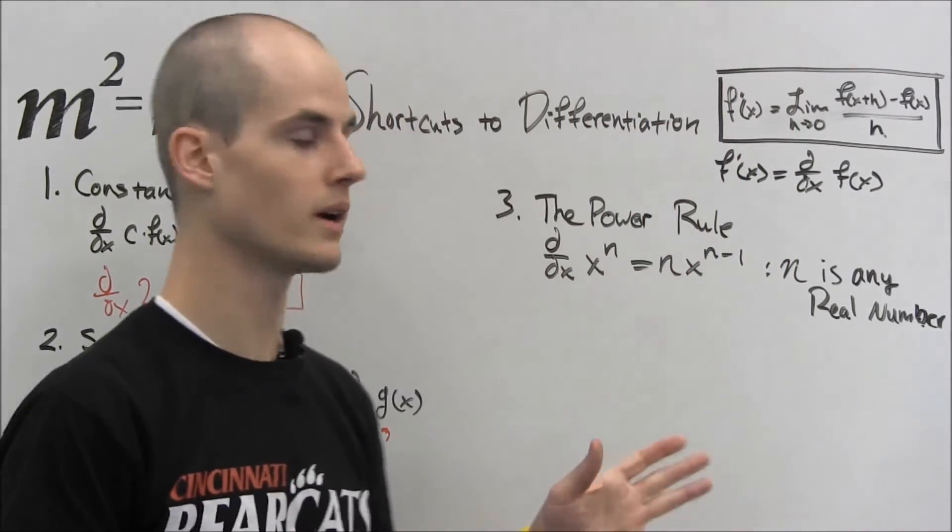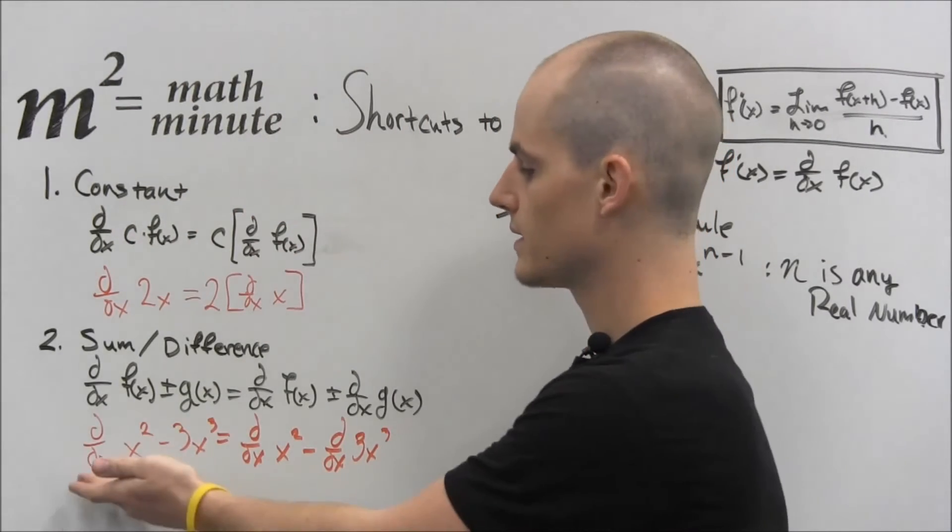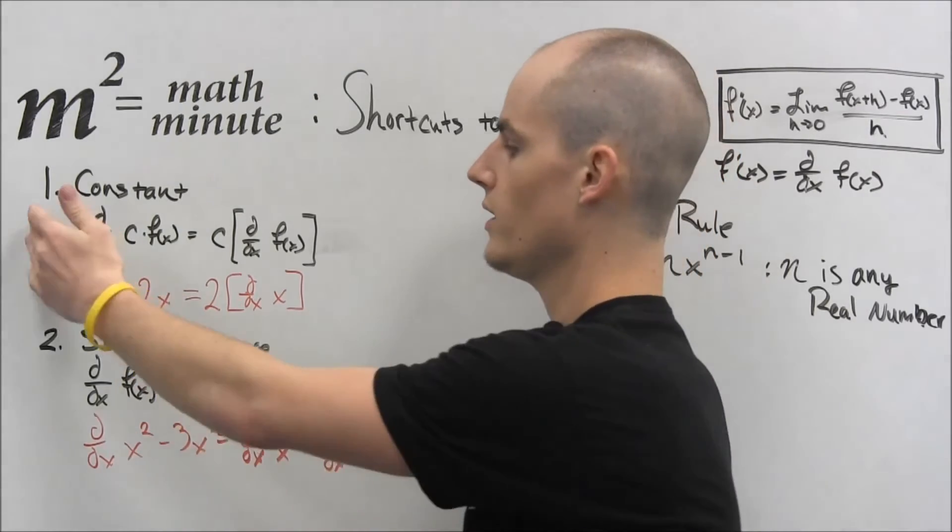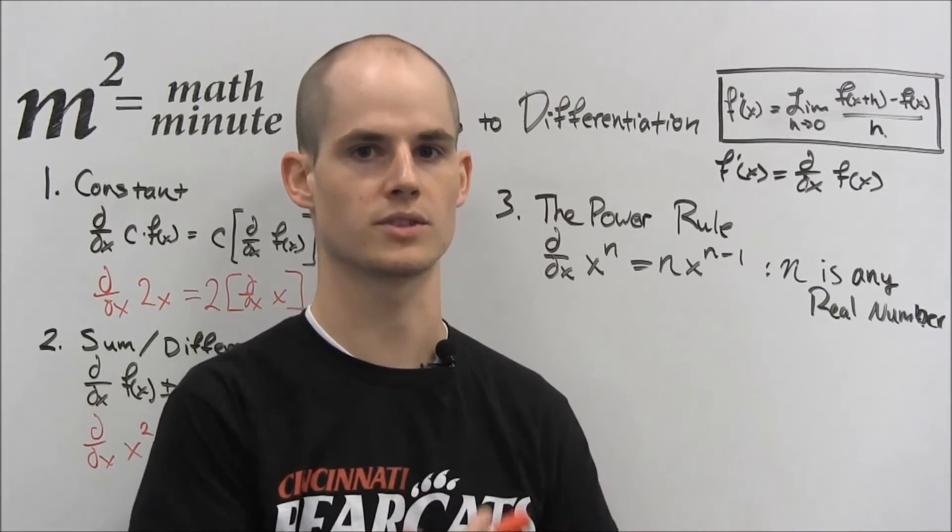Okay? So now this is where, if you notice here, we haven't taken the derivative yet. This d by dx is another way to call this. It's still here. So this is just trying to rewrite a problem to where we can apply some of these rules, which actually are the shortcuts.